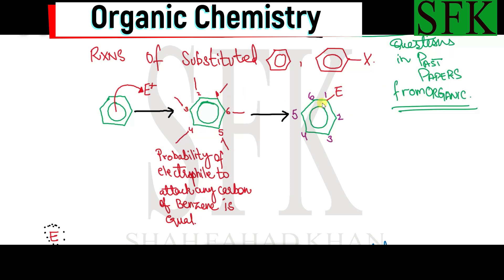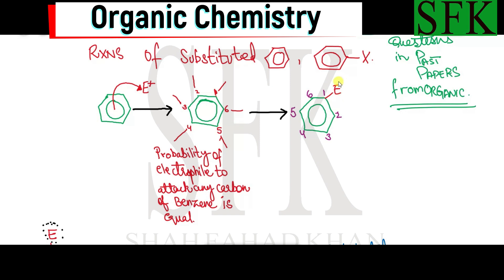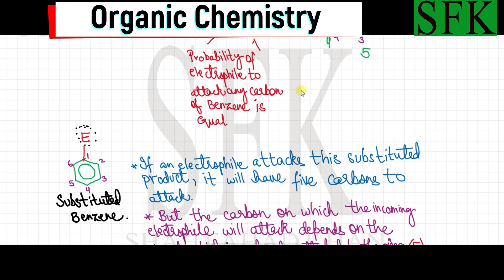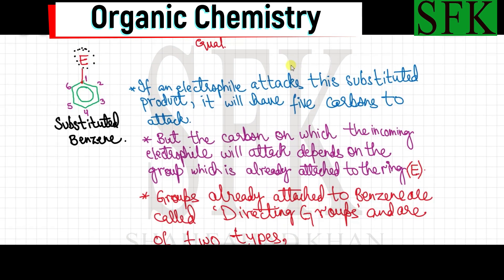Let's say the electrophile gets attached to this carbon atom. The carbon to which the electrophile gets attached is given the number 1, then the rest of the carbon atoms are numbered accordingly. You may go in the clockwise or anticlockwise direction — it doesn't matter because both sides are symmetrical. So numbered clockwise: 1, 2, 3, 4, 5, 6. You can also number anticlockwise, so 6 becomes 2, 5 becomes 3, 4 remains 4, 3 becomes 5, and 2 becomes 6.